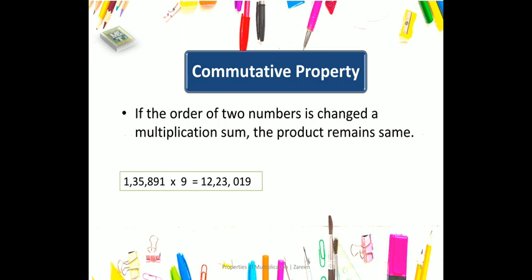Now, if we change the order of the two numbers — 9 and 1,35,000 — we get the same answer, 12,23,019. So we can say that multiplication is commutative.